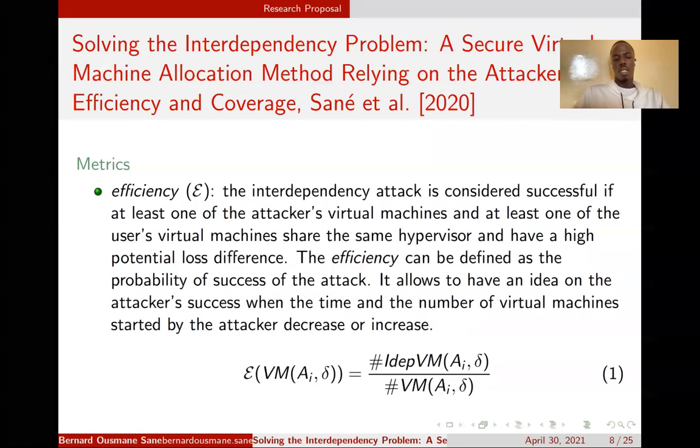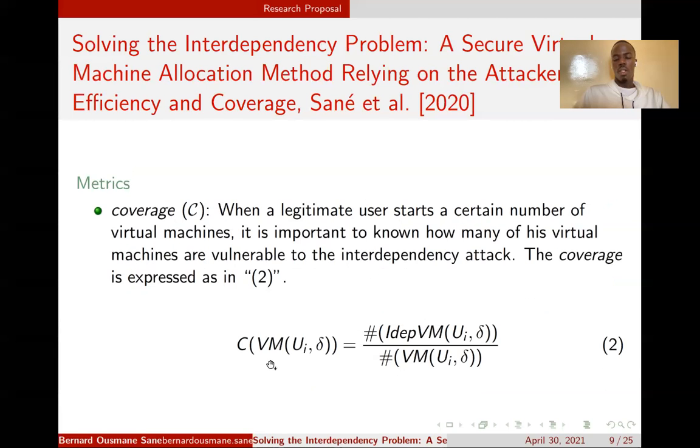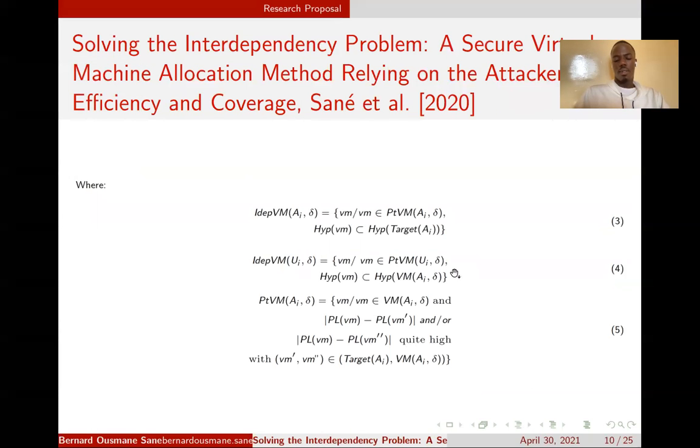Efficiency is one of the security metrics we are using in our algorithm. It gives us an idea about the attacker's success. For example, when an attacker launches a certain number of virtual machines, we would like to know the probability of success of his attack. We can calculate this using attack efficiency. Given also a list of virtual machines launched by a legitimate user, we would like to know how many of the virtual machines are vulnerable to attack.